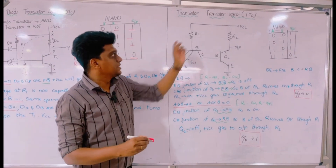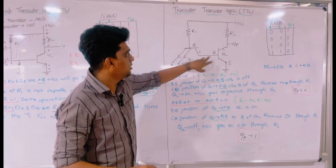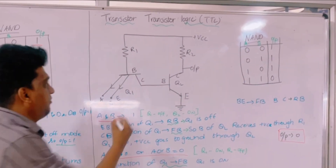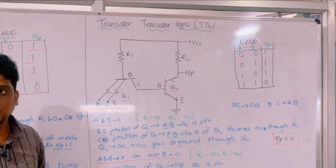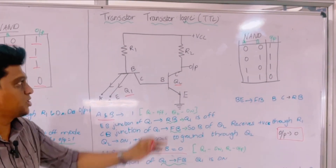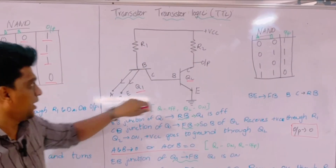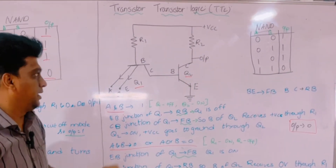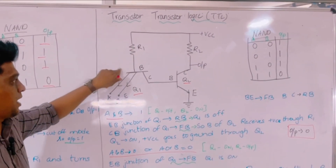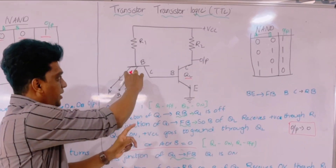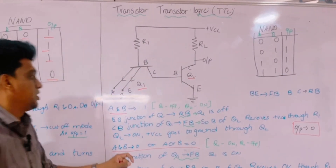Now comes the Transistor Transistor Logic (TTL). Here we are using two transistors: Q1 and Q2. This logic also performs the same NAND gate function. Inputs are applied and the output is taken at the output terminal. In Q1 we identify the emitter-base junction and the collector-base junction.